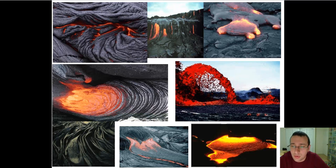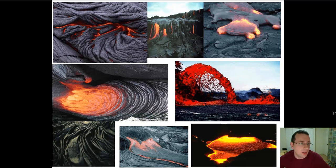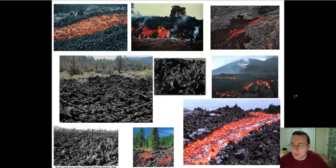These are volcanoes which are common in oceanic hotspots, divergent boundaries, or whenever you have a deep fissure that allows lava to rise through a continent without actually merging or melting the surrounding layers and therefore becoming felsic on its way up. Here you see some of these lava flows, and this is what a lot of people associate when they think about volcanoes, along with the explosive factor.